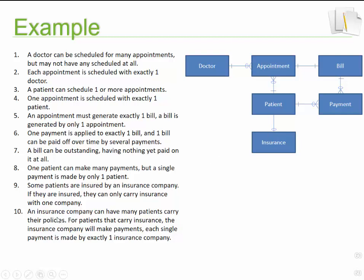Looking at number ten: an insurance company can have many patients. You might ask why it's indicating it's required — think about it. Can we have insurance companies without any patients? The probability is probably no, so any insurance company should have multiple patients. An insurance company can have many patients carrying their policies.